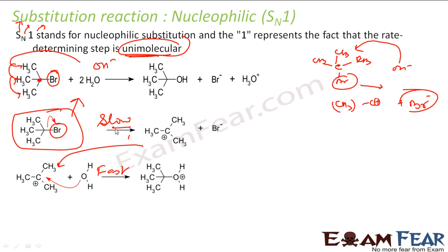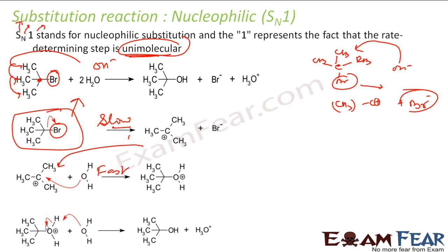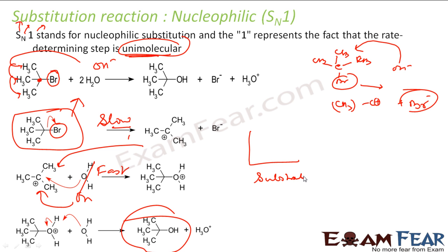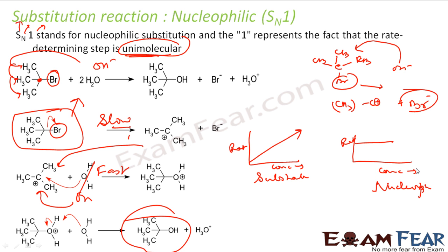The rate-determining step is the substrate leaving. H2O actually attacks, then H3O+ comes out and you get the product. Experimentally, if you increase the concentration of the substrate, the rate of reaction increases. But if you increase the concentration of the nucleophile, the rate is the same — meaning the rate is independent of the nucleophile. The rate depends only on the substrate, and that is why it is called SN1: 1 stands for unimolecular.